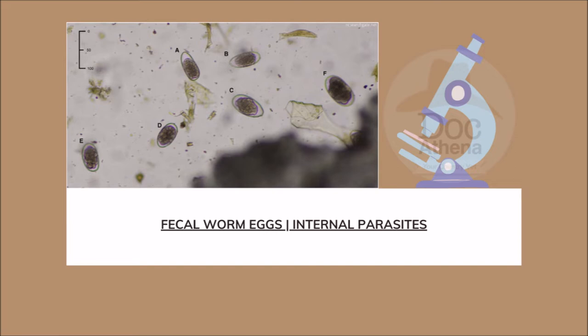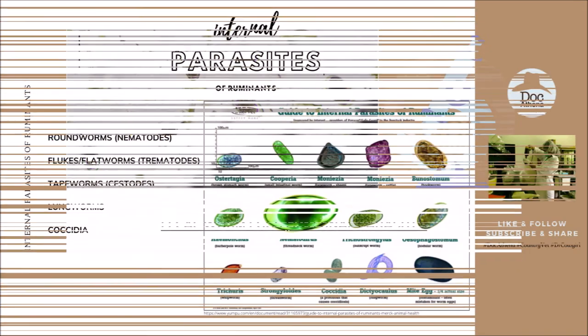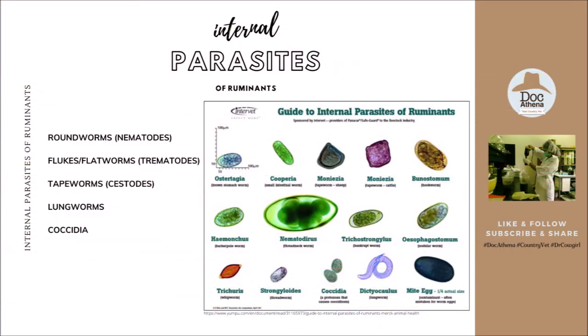We will be focusing on the fecal worm eggs of internal parasites of ruminants. There will be five internal parasites of ruminants that we will be discussing. Thank you to our source of photos, Intervet, for these images — a guide to internal parasites of ruminants, including their relative sizes.